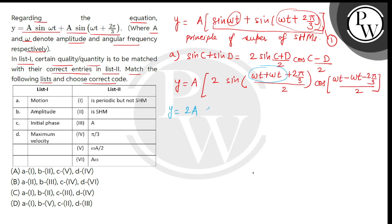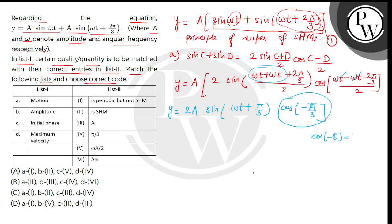यहां से 2 को divide कर देंगे, so this is y equal to 2a sin within bracket omega t plus pi by 3. Then second bracket में देख सकते हैं, यह दोनों omega t terms cancel हो जाएंगे, और हमें मिलेगा cos of minus pi by 3 — क्योंकि 2 फिर से cancel हो चुके हैं। अब यह cos even function है, it means cos of minus theta equals cos of theta.